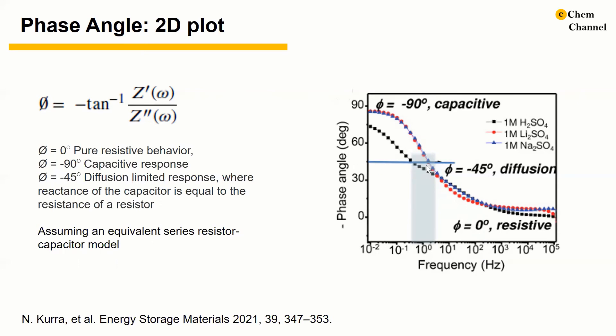Frequency corresponding to a phase angle of negative 45 is considered as the crossover frequency between capacitive and resistive. In the sulfuric acid electrolyte, the crossover frequency is 0.3 Hz, meaning that the resistive component dominates when the charging time is below 3.3 seconds.